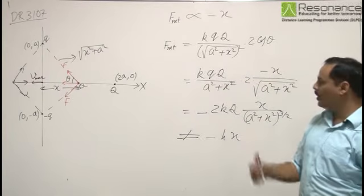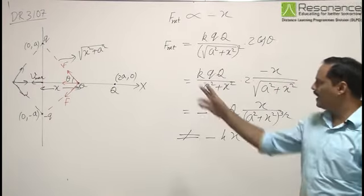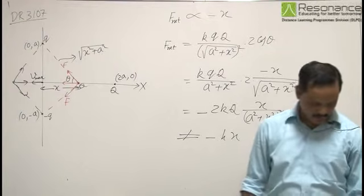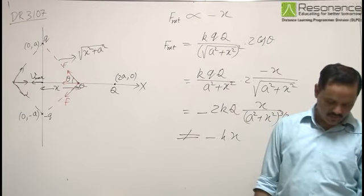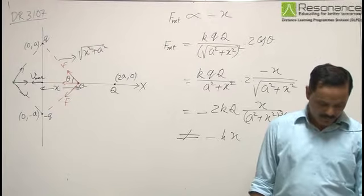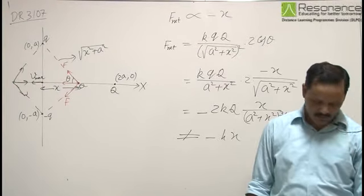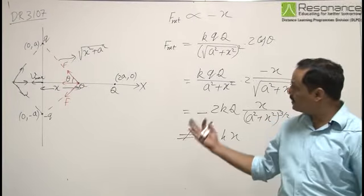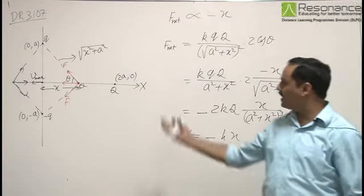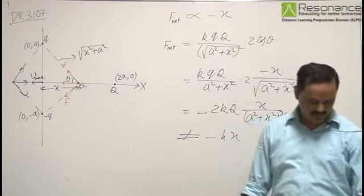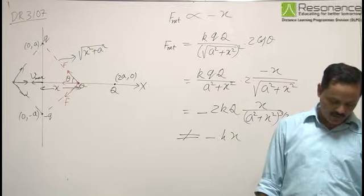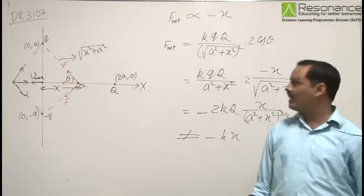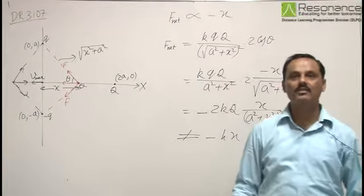So let us see the options. Option A says execute SHM about origin. Option B says velocity of the particle is maximum. Option C says it will move to infinity. And option D says execute oscillatory but not simple harmonic motion. So option B and D are the correct options for this particular question.